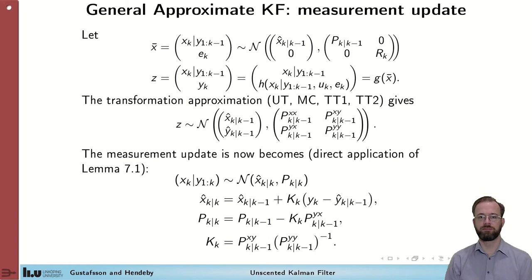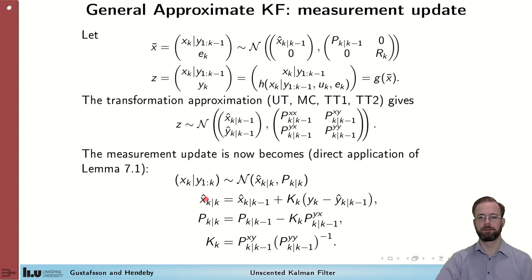The measurement update can be derived as follows. We let the input be the current state and the measurement noise, and compute z — the current state and the expected measurement — as our g in the nonlinear transformation. Applying the unscented transform, Monte Carlo, TT1, or TT2 gives us a mean and covariance for the state and the expected measurement. Applying Lemma 7.1, we get the new mean of the state — the previous mean plus the Kalman gain times the innovation — and a reduced covariance matrix. The Kalman gain is computed from the components obtained in the nonlinear transformation.